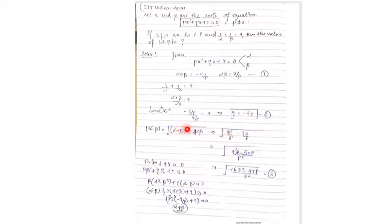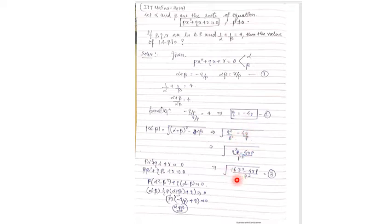We know that |alpha - beta| = √[(alpha + beta)² - 4·alpha·beta]. Substituting alpha + beta = -q/p and alpha·beta = r/p into this expression, we get our third equation.